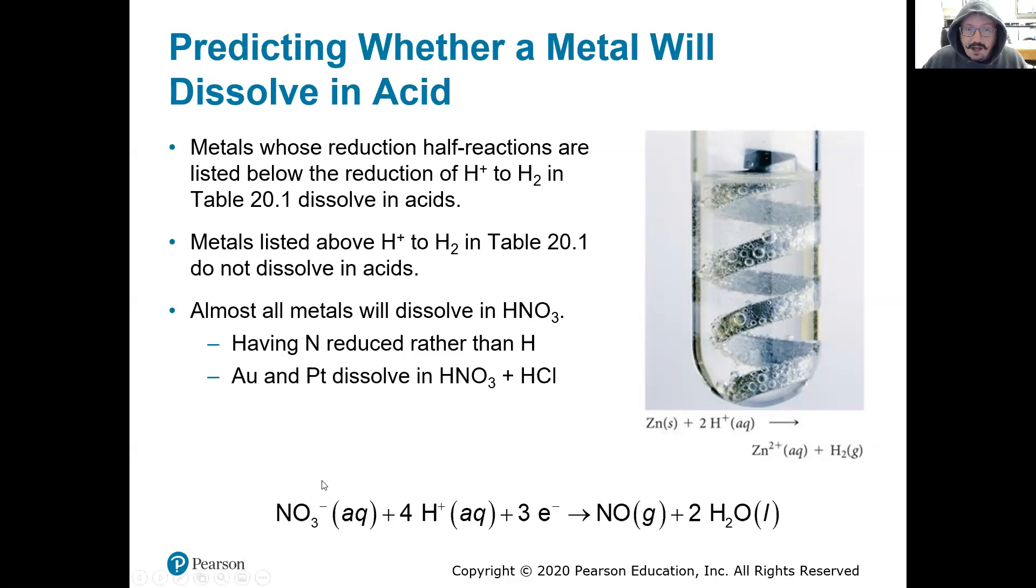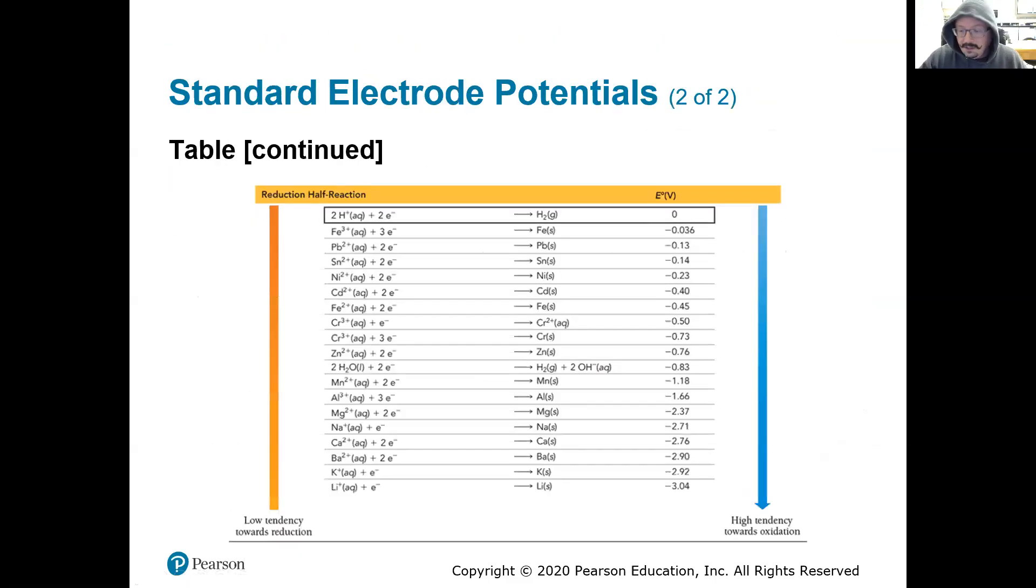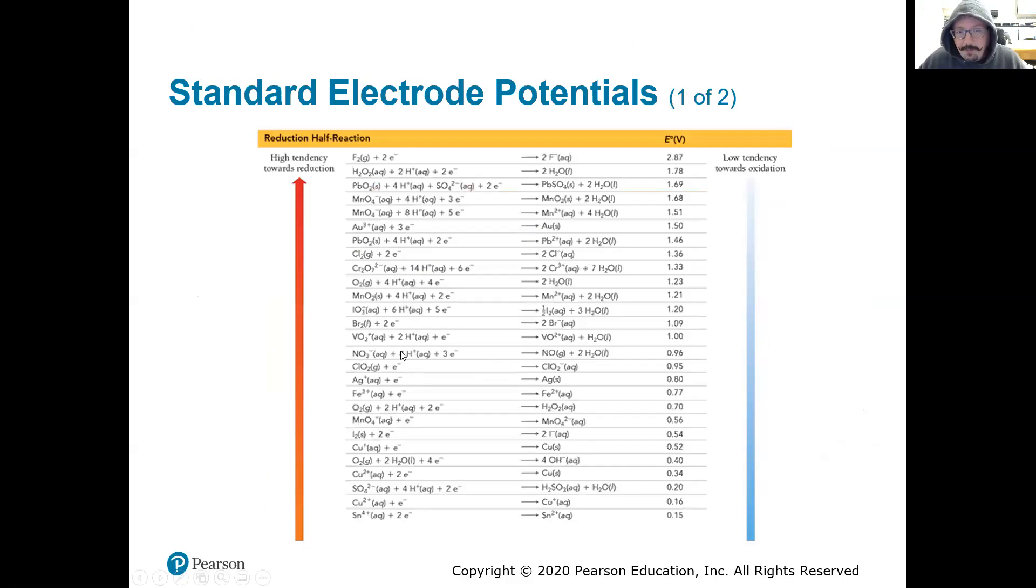Really what we're doing with that acid is we're just looking at where is that on that reduction potential table. And is it above our metal that's going to be dissolved, in which case that it will dissolve, or is it below, in which case the metal will not dissolve. Here's an example of why we can dissolve most things in nitric acid. Here's the reduction for nitric acid, and then we'd look at whatever that metal is.